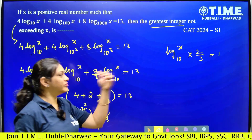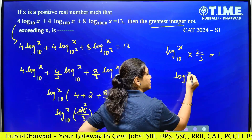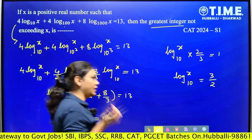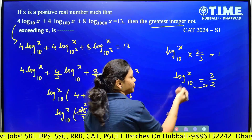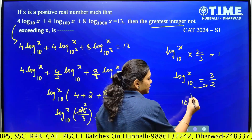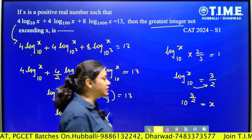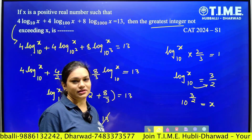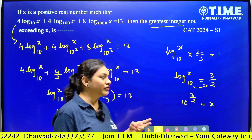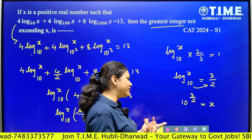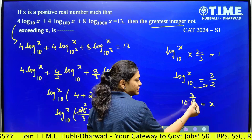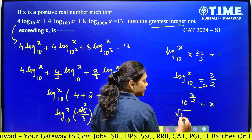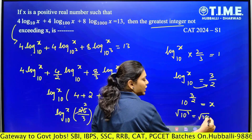If we simplify further, taking the log term to one side: log x base 10 = 3/2. Converting this logarithm to index form to find the value of x: 10^(3/2) = x. This is still not the final answer, because the question asks for the greatest integer not exceeding x. Now, 10^(3/2) can be separated as 10^3 × 10^(1/2), which is simply the square root of 10 cubed, i.e., √1000.